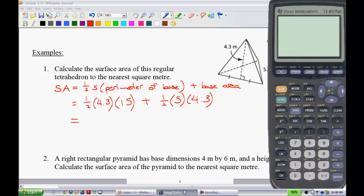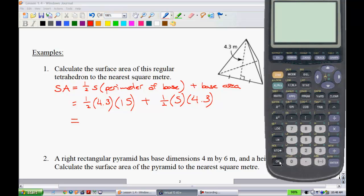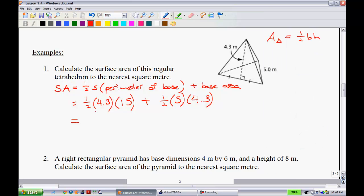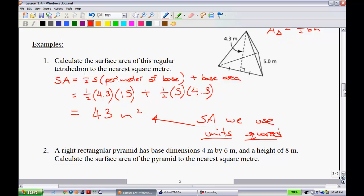Now what we would do is use our calculator. I would plug all this in carefully. We'll have 0.5 times 4.3 times 15 plus 0.5 times 5 times 4.3. That gives us a surface area of exactly 43 meters squared. Recall that for surface area we use units squared. Of course they don't always have to be meters, but they're always going to be units squared.